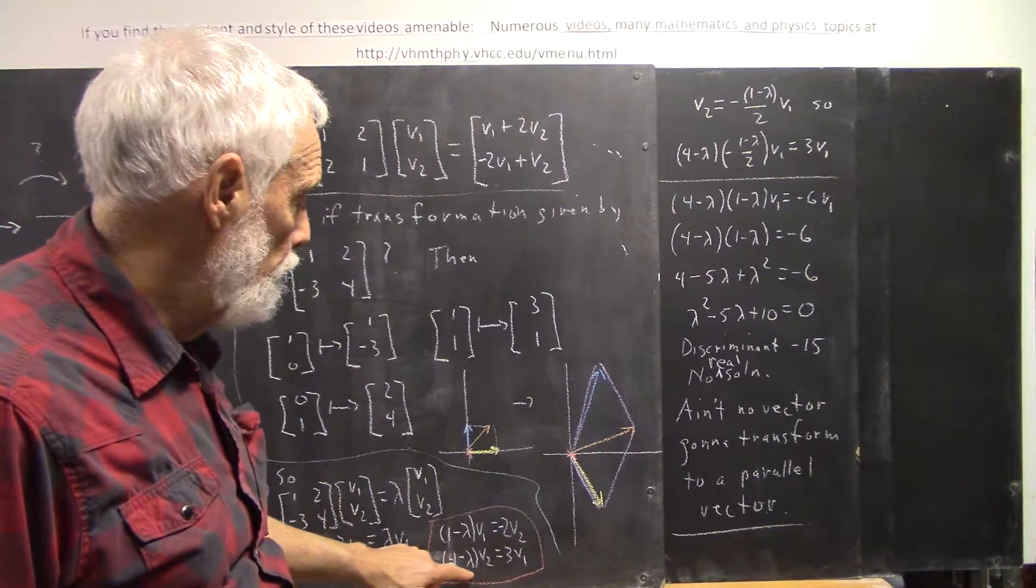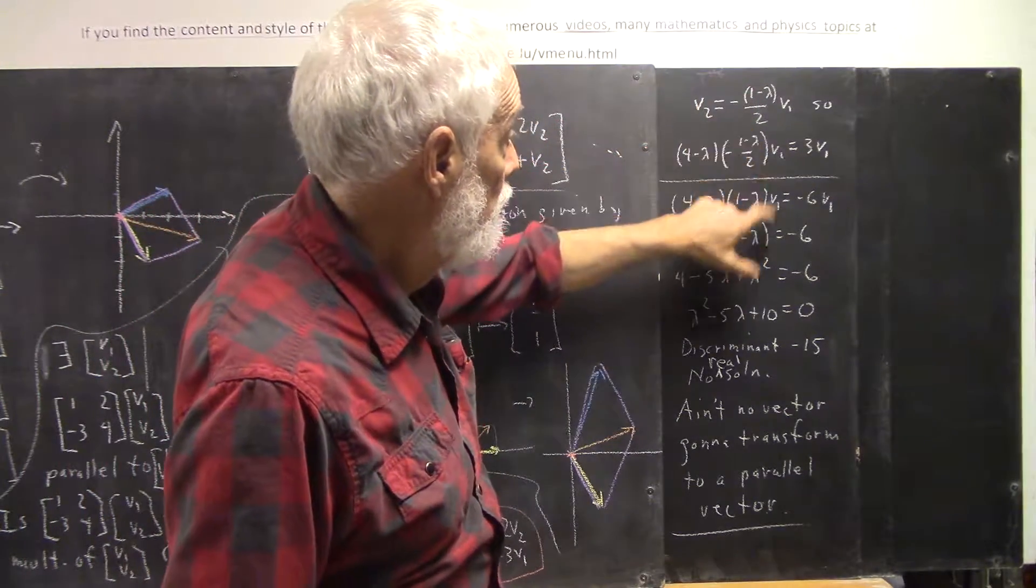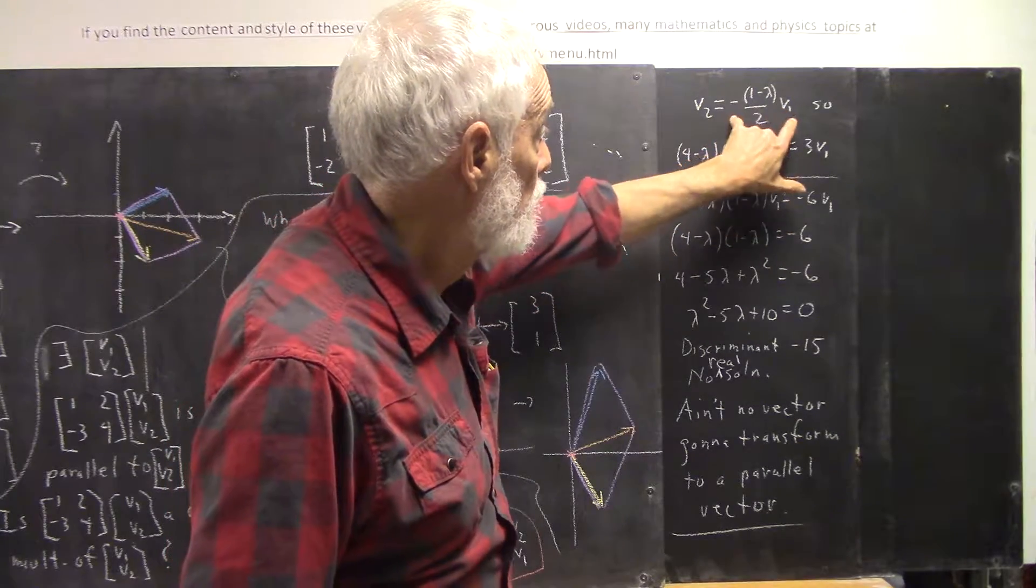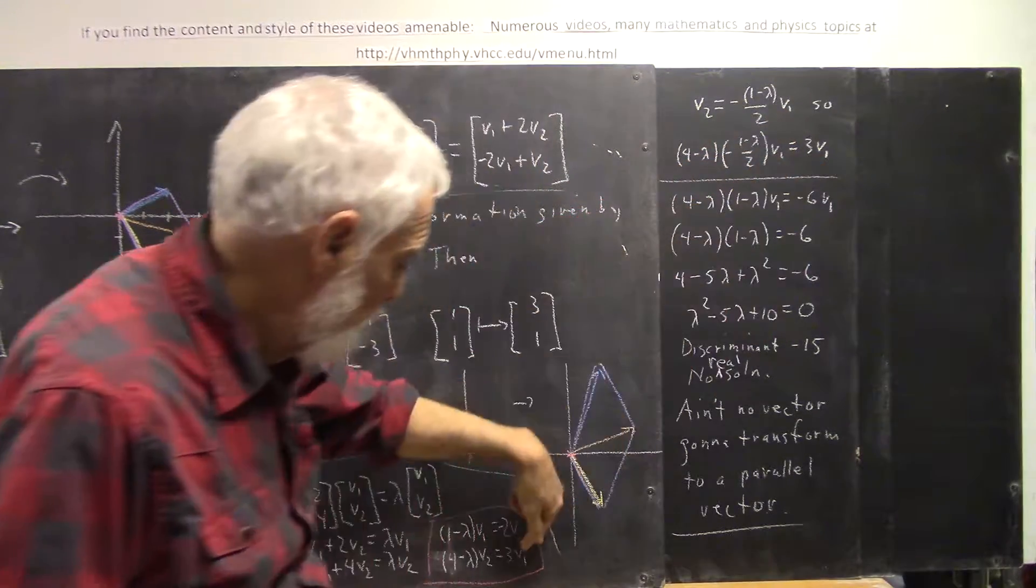And then we plug that in for v2 here, so we're going to have 4 minus lambda times v2, which is this quantity times v1, and that's got to equal 3v1.